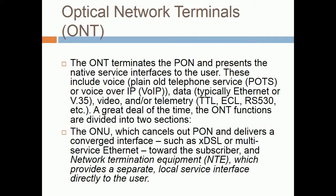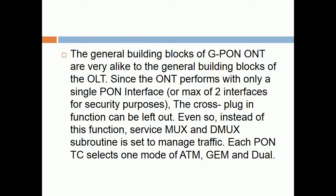A great deal of the time, the ONT functions are divided into two sections: the ONU, which cancels out PAN and delivers a converged interface such as XDSL or Multi-Service Ethernet toward the subscriber, and Network Termination Equipment NT, which provides a separate local service interface directly to the user. The general building blocks of G-PAN ONT are very alike to the general building blocks of the OLT. Since the ONT performs with only a single PAN interface, or max of two interfaces for security purposes, the cross-connect function can be left out. Instead, a service MUX and DMUX subroutine is set to manage traffic. Each PAN TC selects one mode of ATM, GEM, and DUO.